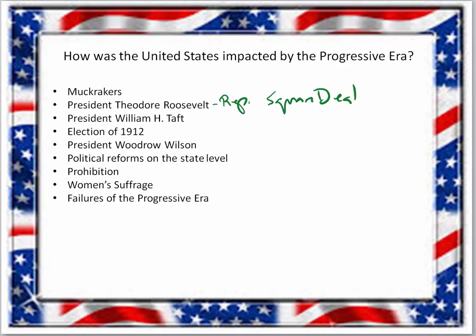Roosevelt also tried to regulate railroads more strictly. After two terms, Roosevelt was followed by William Howard Taft, who actually broke up more trusts than Roosevelt but disappointed him in other areas — the Gifford Pinchot-Ballinger affair being one. That made Roosevelt decide to run for office again, but he didn't get the Republican nomination. So Taft ran as Republican, Roosevelt as the Bull Moose or Progressive candidate, Woodrow Wilson as Democrat, and Eugene V. Debs as the Socialist candidate. Wilson won the election, and even as a Democrat, more progressive reforms followed.